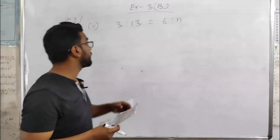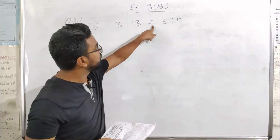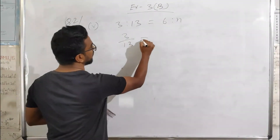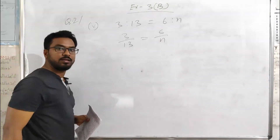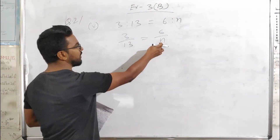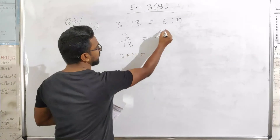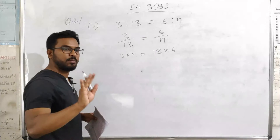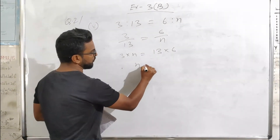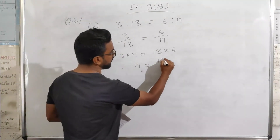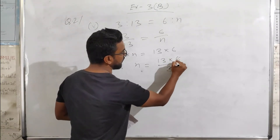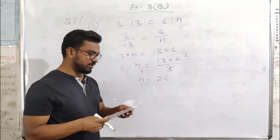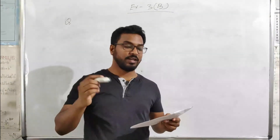The next part gives 3 ratio 13 proportional to 6 ratio n. We write this as 3 by 13 and 6 by n. Cross multiplying gives 3 times n equals 13 times 6. Taking 3 to the other side by dividing, n equals 26.